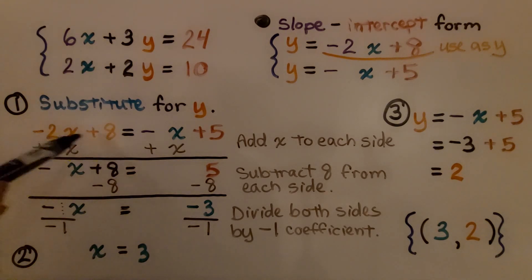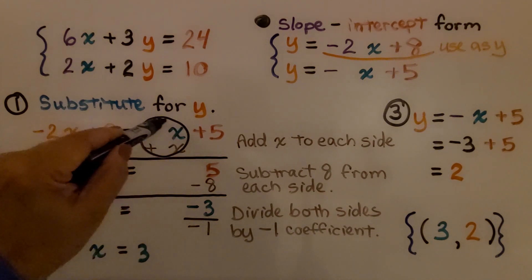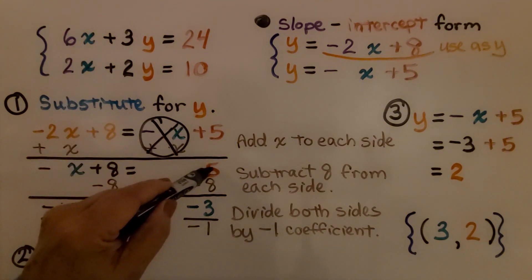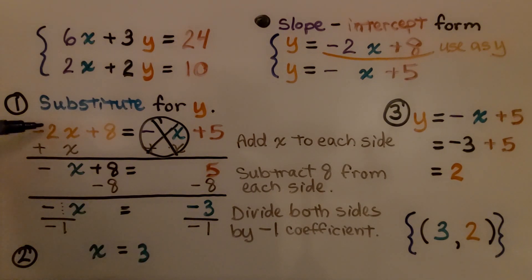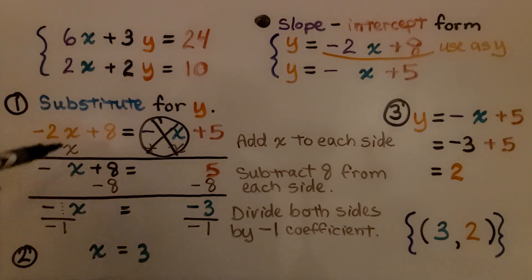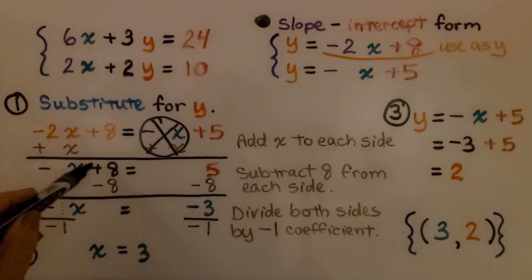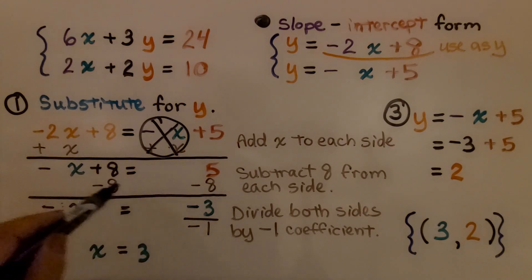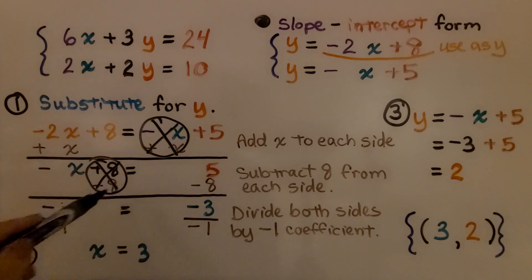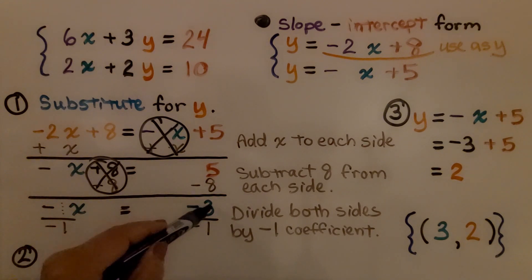I can add x to each side of the equation. Since this is a minus x, we do plus x on both sides, which creates a zero pair and eliminates it. Now we only have 5 on that side. On the other side, if we have negative 2x and add x, we get negative 1x — we just write negative x — and we drop down the 8. Since that's a plus 8, we subtract 8 from each side, creating a zero pair. We're left with negative 1x equals 5 minus 8, which is negative 3.